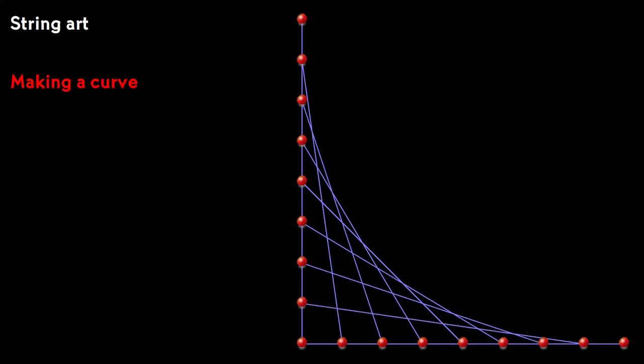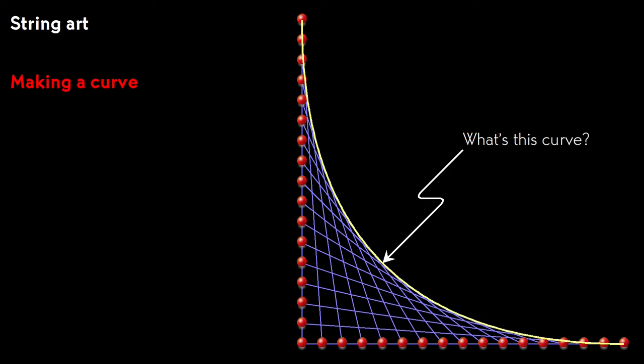If we add more pins and more strings, we appear to approximate the curve more closely. But what is this curve?